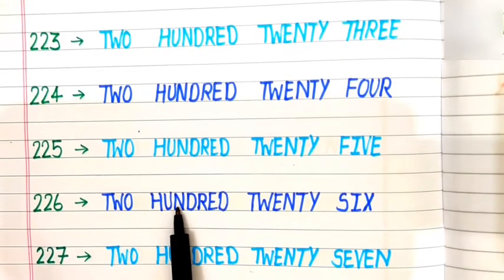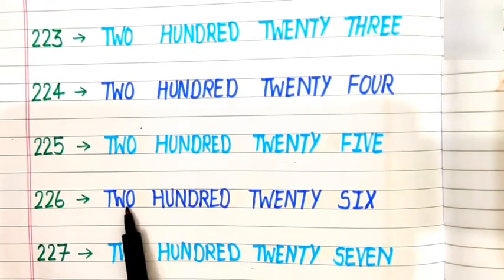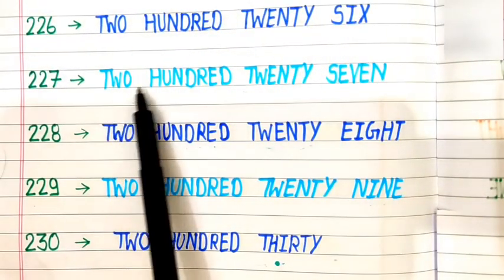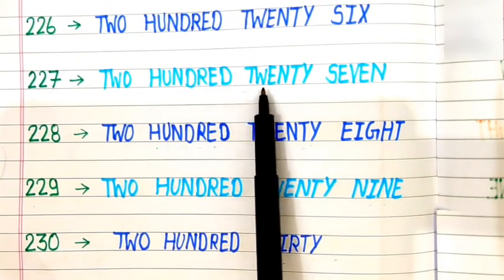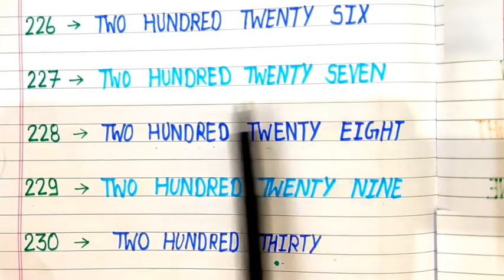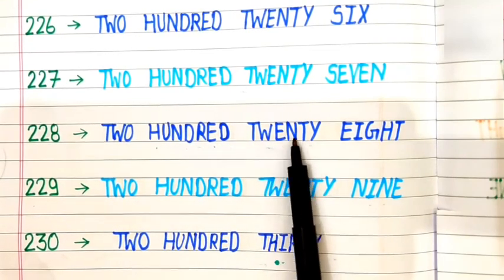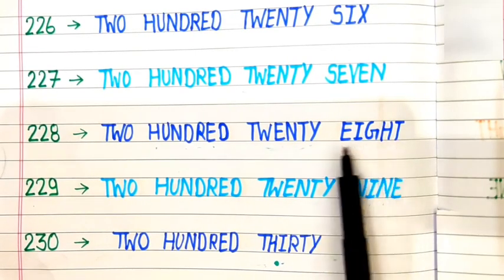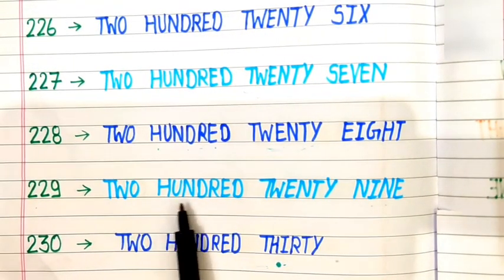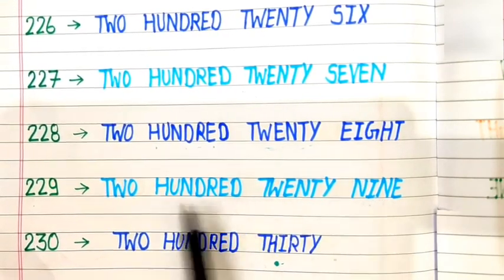225: T-W-O H-U-N-D-R-E-D T-W-E-N-T-Y F-I-V-E. 225. 226: T-W-O H-U-N-D-R-E-D T-W-E-N-T-Y S-I-X. 226. 227: T-W-O H-U-N-D-R-E-D T-W-E-N-T-Y S-E-V-E-N. 227. 228: T-W-O H-U-N-D-R-E-D T-W-E-N-T-Y E-I-G-H-T. 228. 229: T-W-O H-U-N-D-R-E-D T-W-E-N-T-Y N-I-N-E. 229.